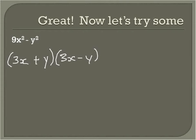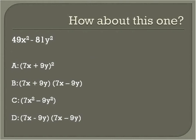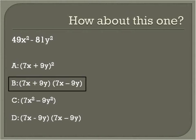How about this one? Go ahead and give it a shot. Take the square root of the first term plus the square root of the second term, then the square root of the first term minus the square root of the second term. Did you get this for your answer: 7x plus 9y, times 7x minus 9y? If you did, you're in good shape.